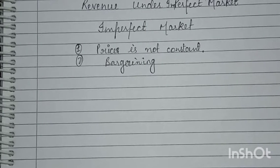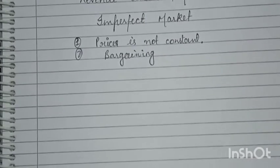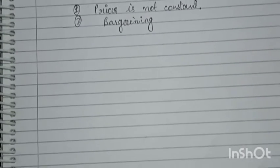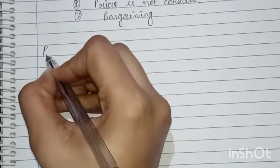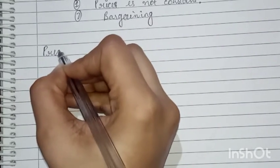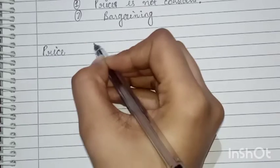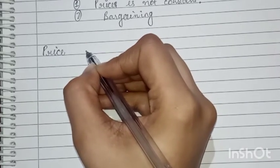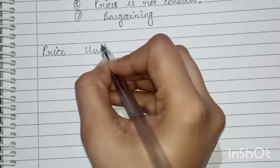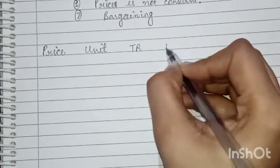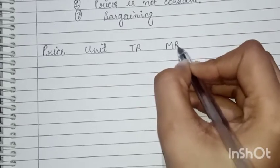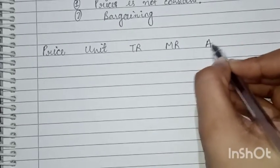Now we will do tabular forming — we will make a schedule. We will take price, units, TR, MR, and AR as our columns.